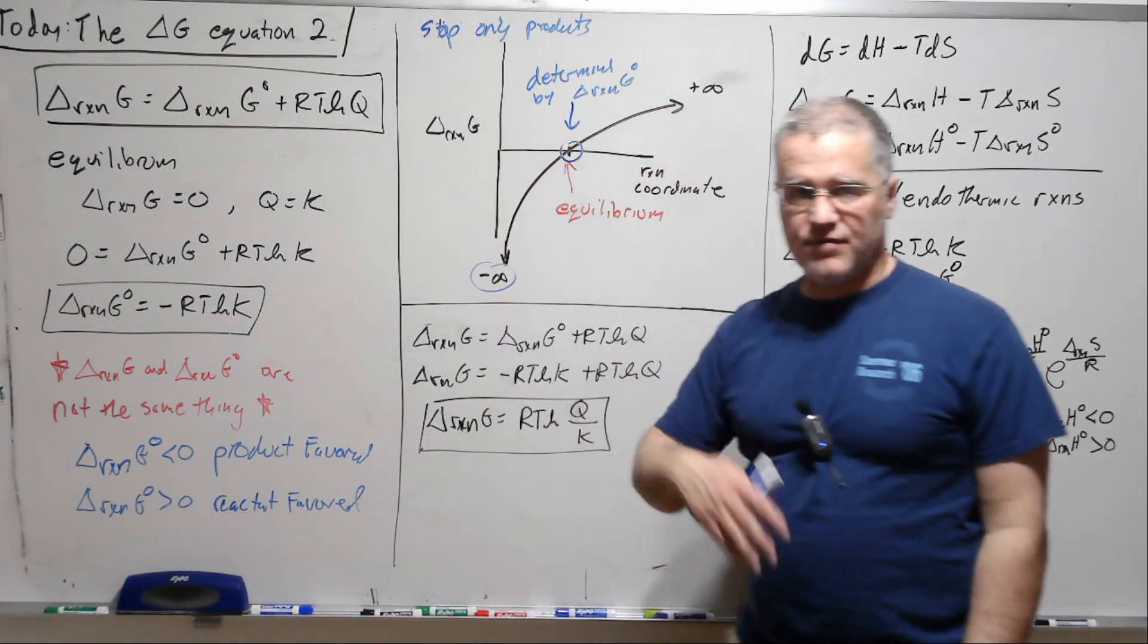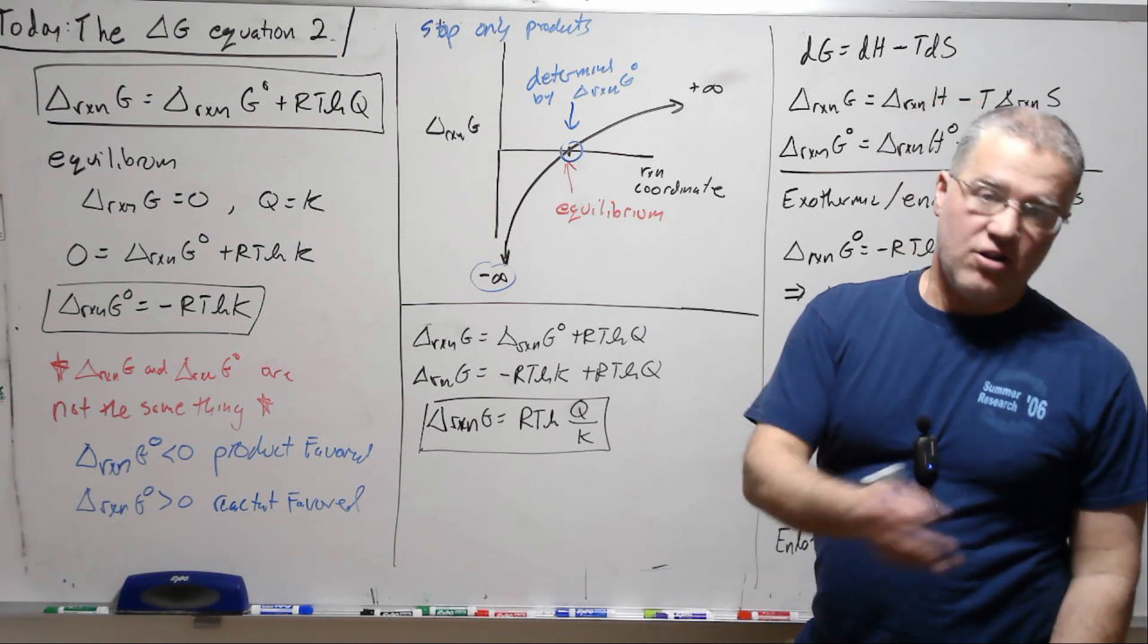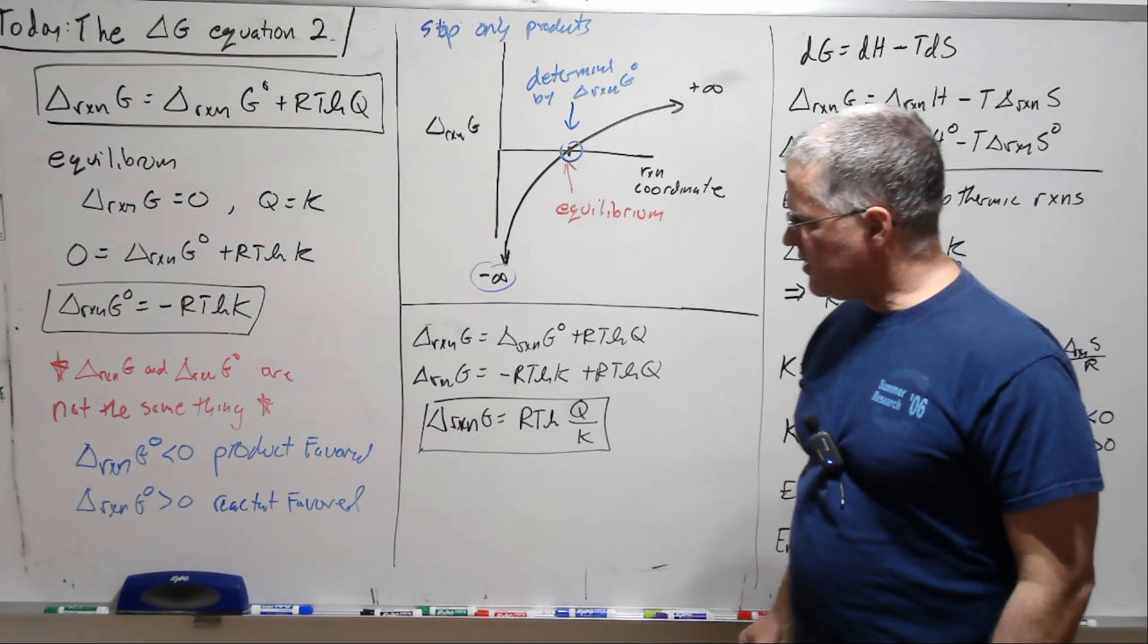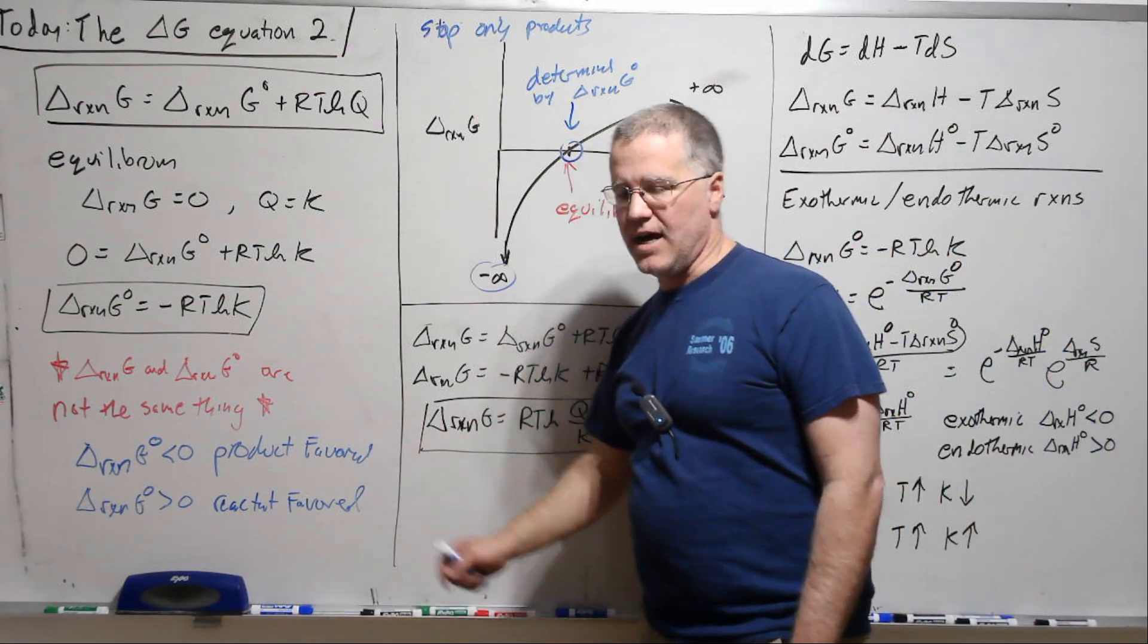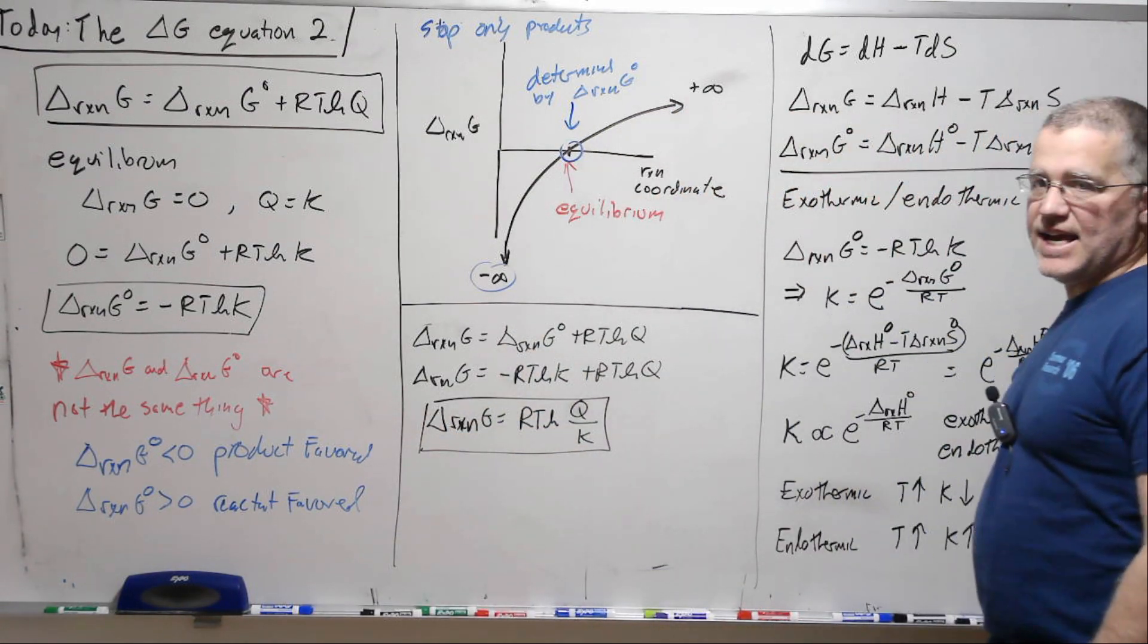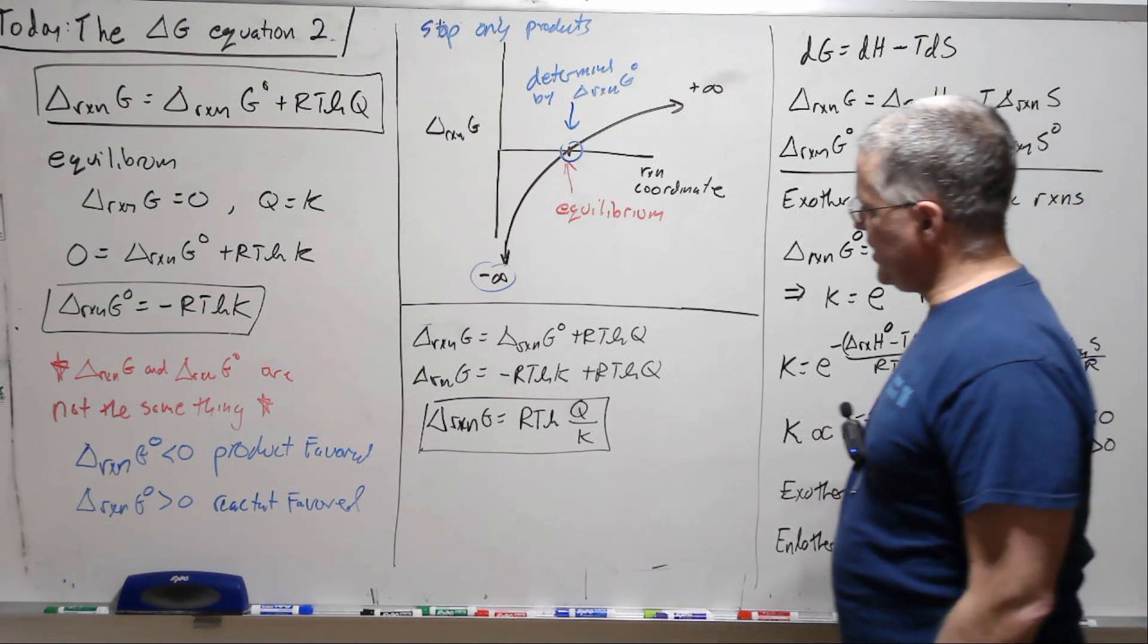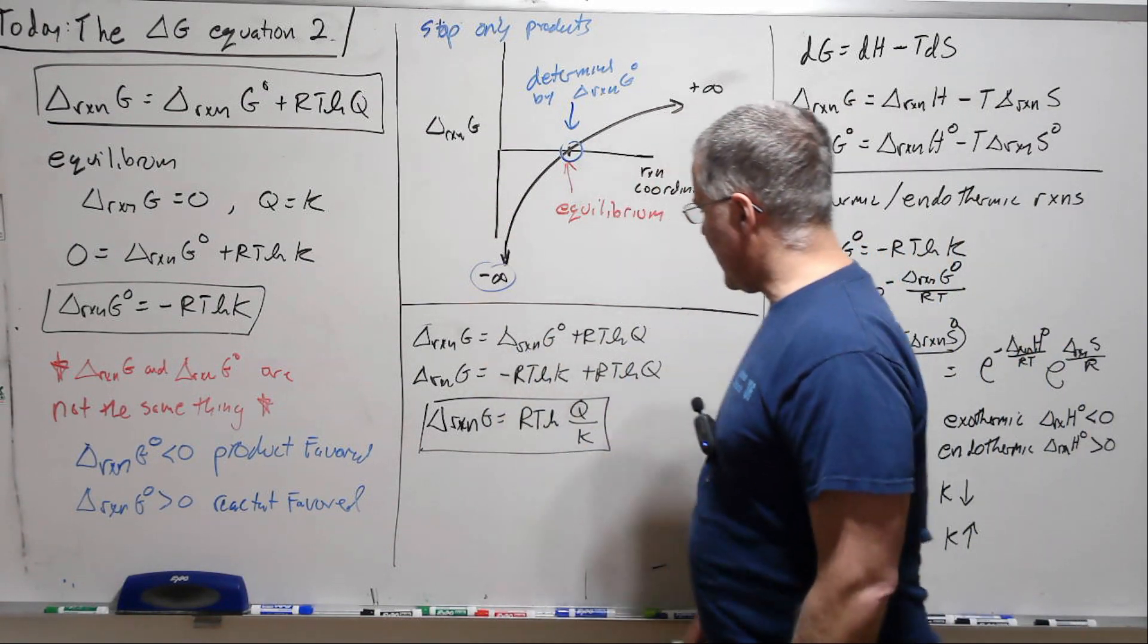Likewise, if we have a very product favored reaction, if we take it all the way, then there'll be a driving force to go backwards. So this is just talking about where we end up relative to the standard state. And again, Delta G is through the course of the whole reaction.